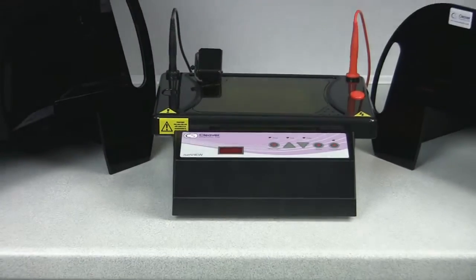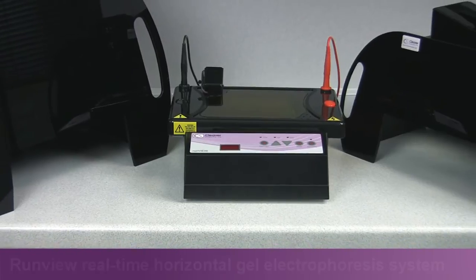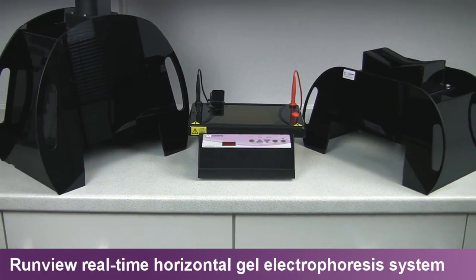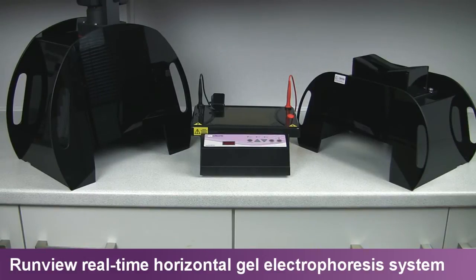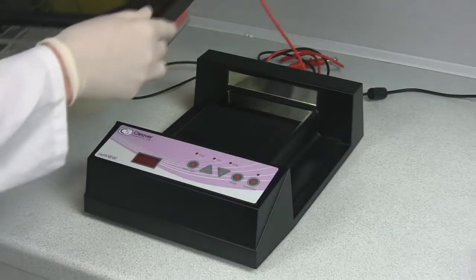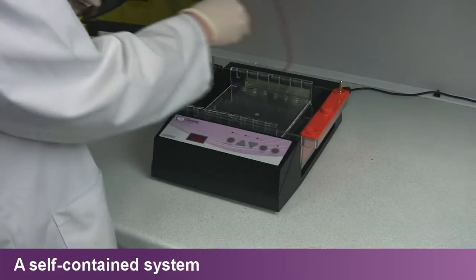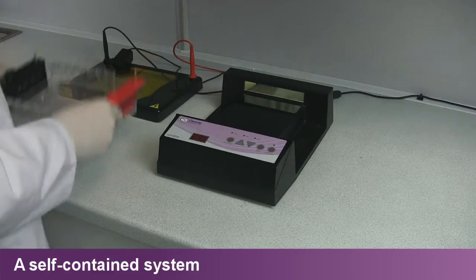RunView includes everything except reagents to run and see horizontal DNA gel electrophoresis in real time. It combines the versatility of Cleaver Scientific's MS Choice Trio system with the time and space saving convenience of a power supply and gel illuminator integrated within one benchtop unit.